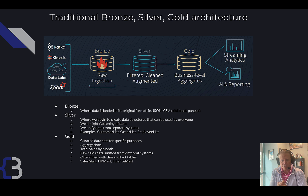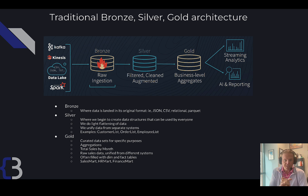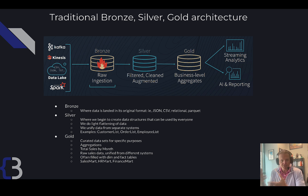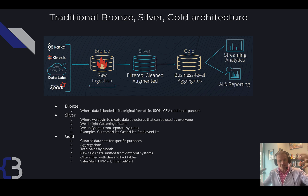We would do aggregations like sales by day, sales by year, sales by month, sales by quarter. Typically in the gold layer we would see star schemas — fact tables and dimension tables. We would target a gold data structure for each purpose: this data set is for finance reporting, this one is for sales planning, this one is for staffing requirements. You would not want one data set to do everything for everybody. You'd have many different targeted data sets in the gold layer.